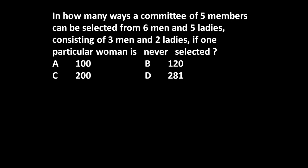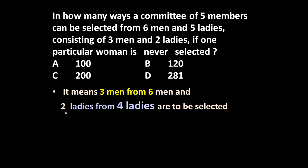The condition is one particular woman is never selected. There are six men and we have to select three. Out of five ladies we have to select two, but one particular woman is never selected. So we select two ladies from four ladies, because five ladies minus one leaves only four available ladies.